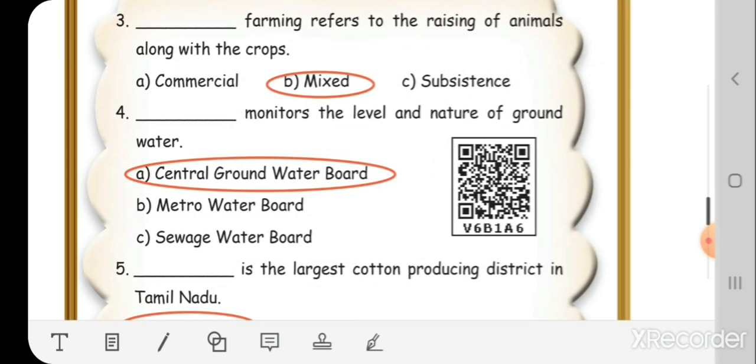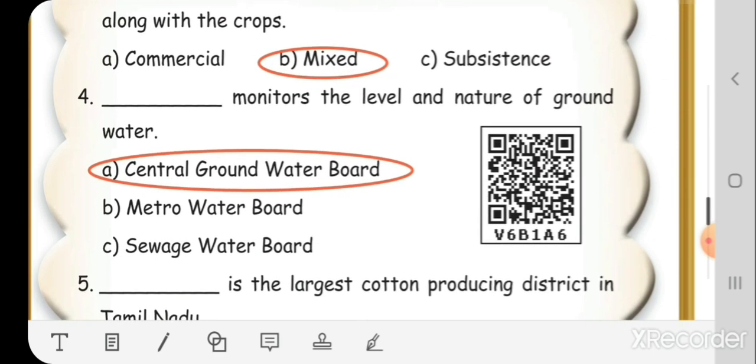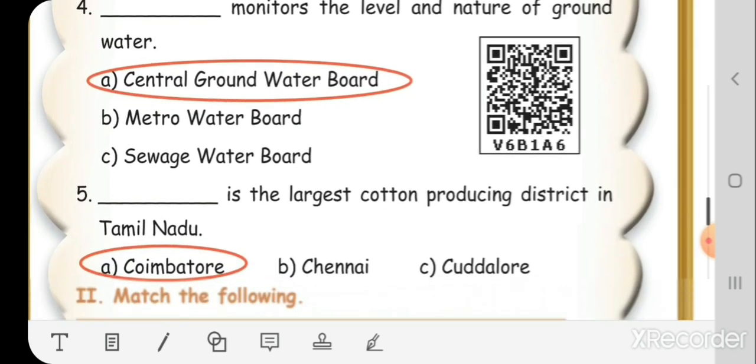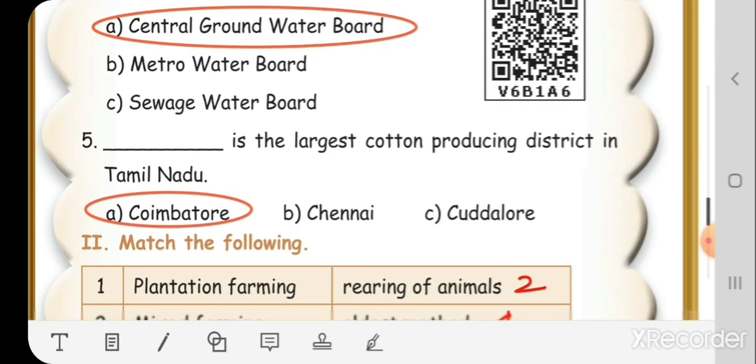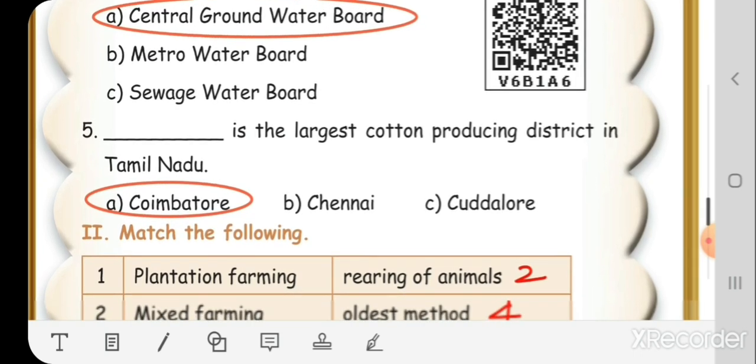Fourth one. Dash monitors the level and nature of ground water. Central ground water board. Fifth one. Dash is the largest cotton producing district in Tamil Nadu. Coimbatore.